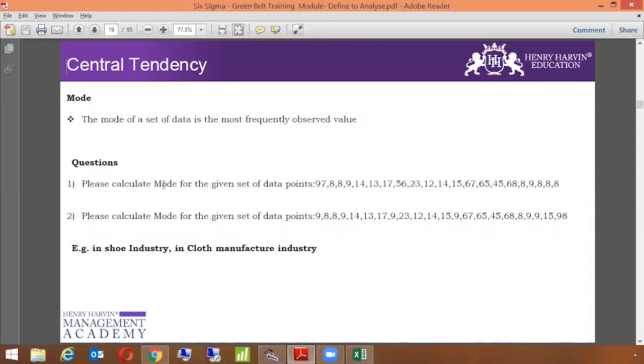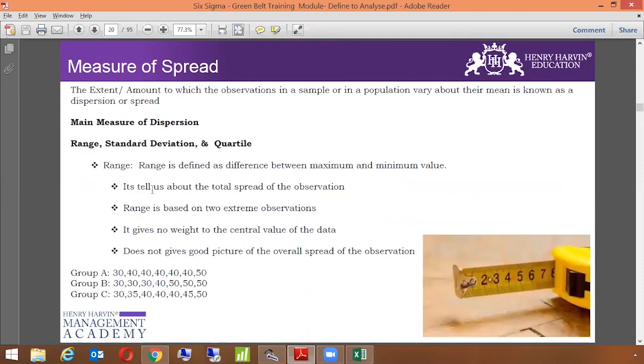The third thing is mode. Mode is the most frequently observed value in a given data set. Mode is not used mostly in the service industry, but it is used in manufacturing or industries where a lot of goods are produced. In this given data set, if you want to see which value is the most frequent one, it's 8. You can see 8 appears five times. In this scenario, I would consider mode as my measure of central tendency. There's a second example, and I would request you to do it on your own to understand how to calculate mode.